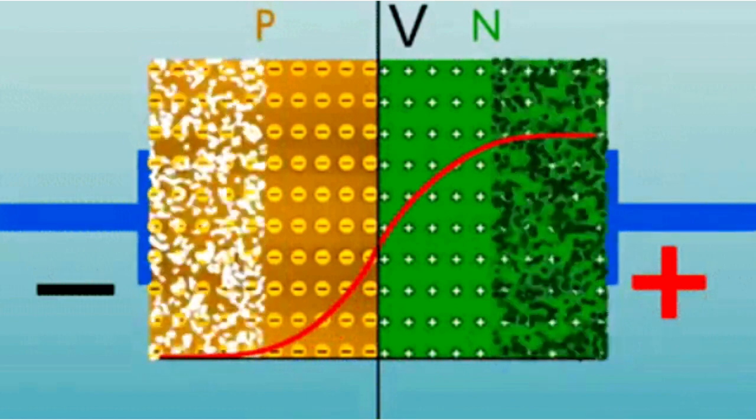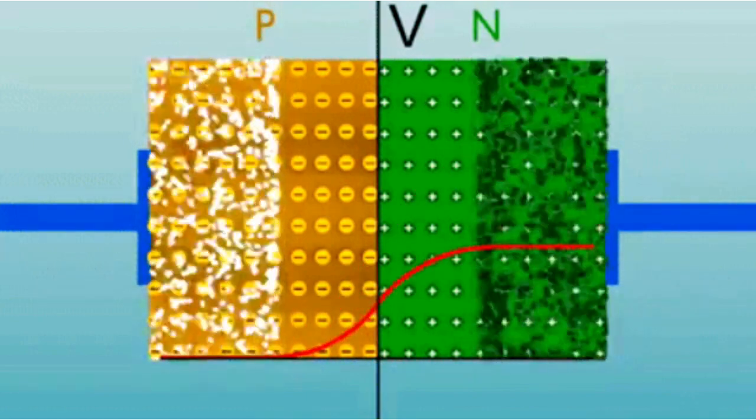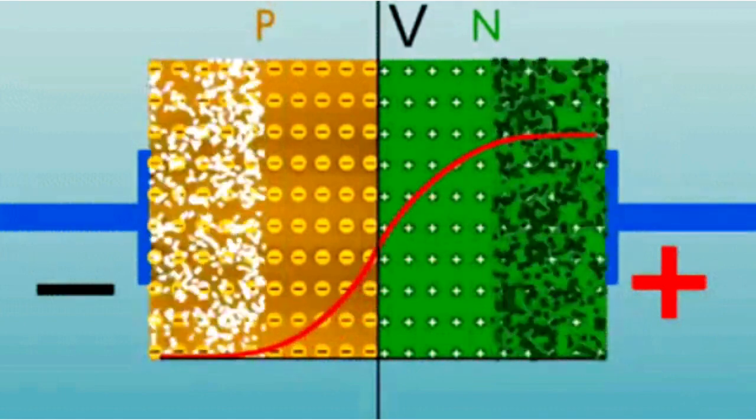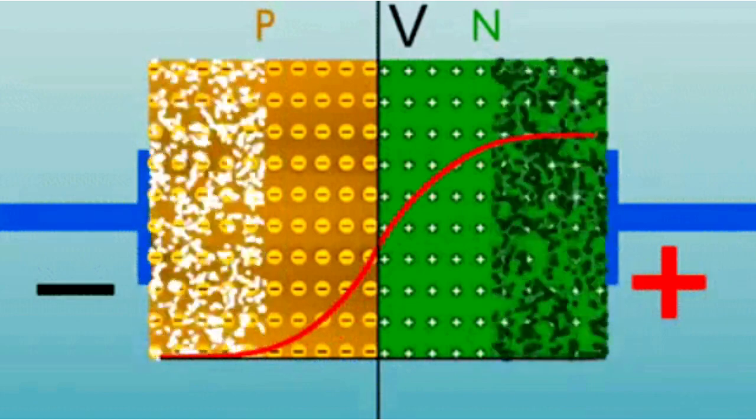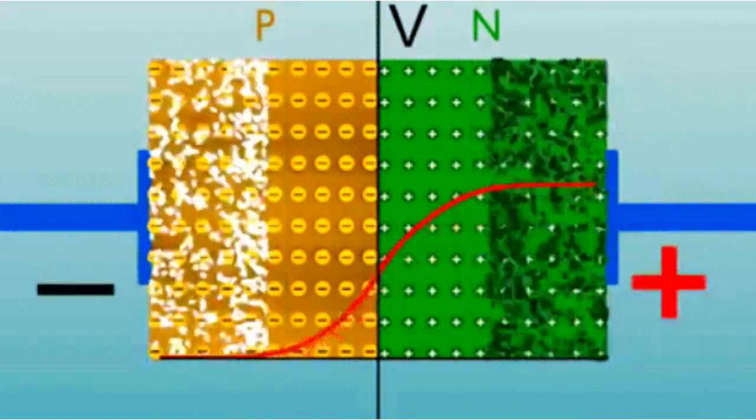The reverse breakdown voltage is the reverse bias voltage at which the diode breaks down and conducts heavily in the reverse direction. This breakdown can be either due to avalanche breakdown or zener breakdown, depending on the diode type.